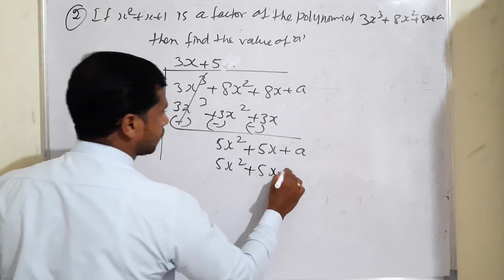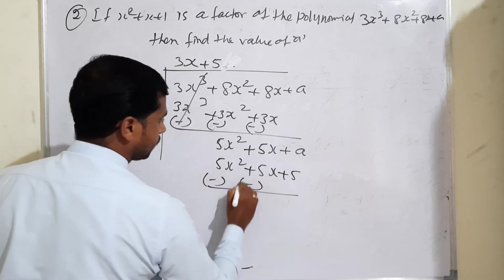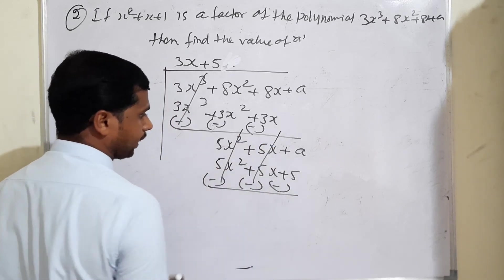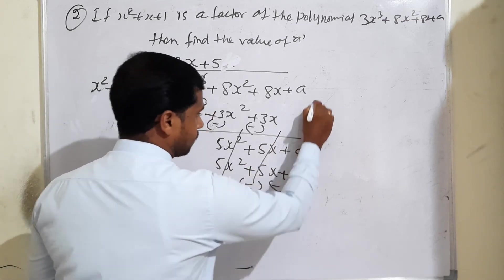Again, 5 times 1 is 5. Change signs to subtract. 5x² minus 5x², 5x minus 5x cancel out. Remaining: a minus 5.